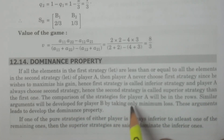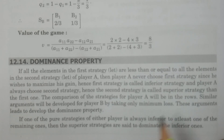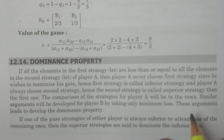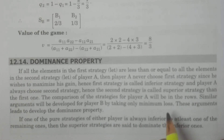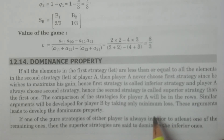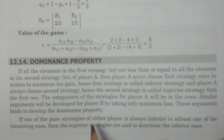The comparison of strategies for player A will be in the rows, since in the payoff matrix player A is always represented in the rows. Similar arguments will be developed for player B by taking only minimum loss. Player B always considers the strategy which gives minimum loss. These arguments lead to developing the dominance property.